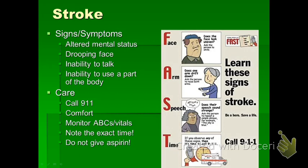Signs and symptoms of a stroke include altered mental status, drooping face, inability to talk, and inability to use one side of the body. We use the acronym FAST: F for Face — does it look uneven or drooping? A for Arm — have the patient lift both arms to 90 degrees and hold for 10 seconds; if one arm falls, that indicates a stroke on that side. S for Speech — do they have slurred speech or inability to talk or move their mouth?